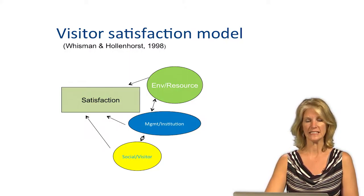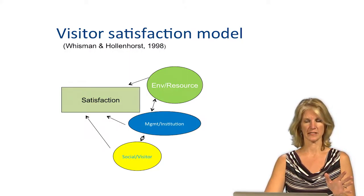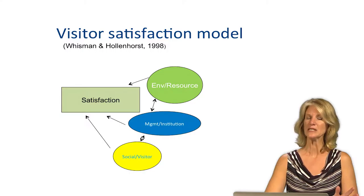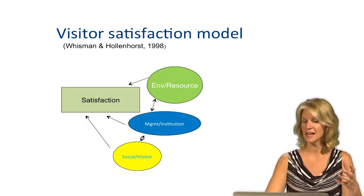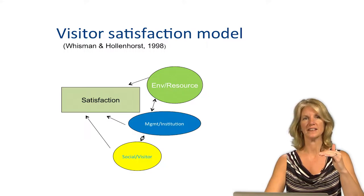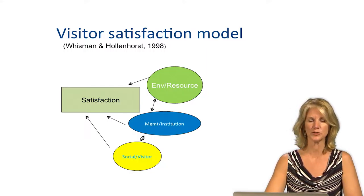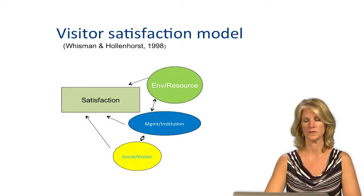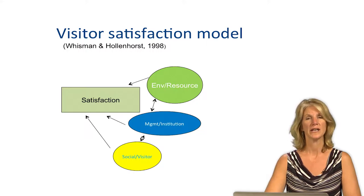As you know from the Manning reading, management frequently focuses on visitor satisfaction as an important outcome of visitor behavior. Very simply in this model, satisfaction can be determined by what we expect and what actually happens when we're at the resource under the prevailing management institution. In the Manning reading, emphasis was on the visitor and social factors that influence provision of a satisfying recreation opportunity. We continue with that emphasis in this presentation.